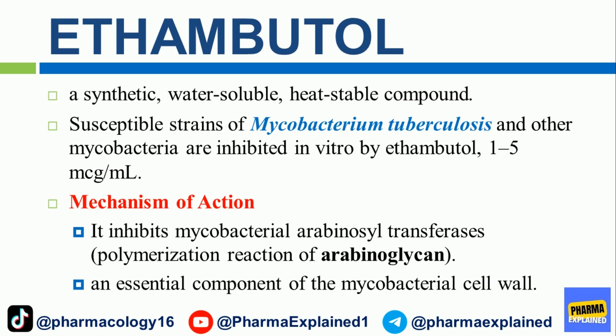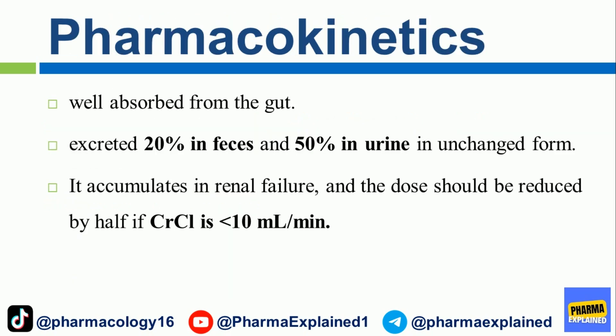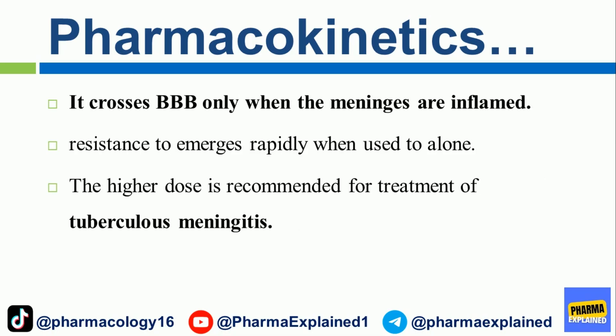Ethambutol is a synthetic, water-soluble, heat-stable compound. Susceptible strains of mycobacterium tuberculosis and other mycobacteria are inhibited in vitro by ethambutol at 1–5 mcg/mL. Mechanism of Action: It inhibits mycobacterial arabinosyl transferase's polymerization reaction of arabinoglycan, an essential component of the mycobacterial cell wall. Pharmacokinetics: Well absorbed from the gut, excreted 20% in feces and 50% in urine in unchanged form. It accumulates in renal failure and the dose should be reduced by half if CrCl is less than 10 mL/min. It crosses the BBB only when the meninges are inflamed, and resistance emerges rapidly when used alone.